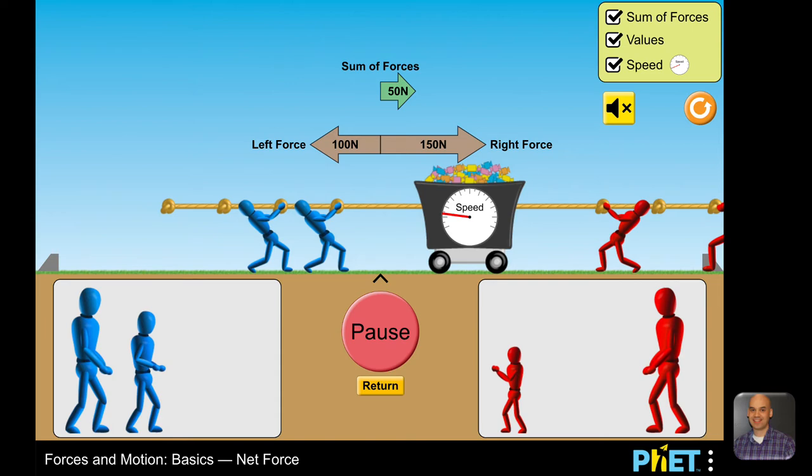This is a PhET simulation. You've probably seen this. It's the net force, force in motion basic simulation where you can add and subtract people and get the cart to accelerate in either direction. It shows some of the forces and the speed of the cart at any given moment. And the reason why I bring this one up is because I tried something this year where instead of saying, you know, put two people on the blue side, put two people on the red side, press go. So what happens? What do you observe?